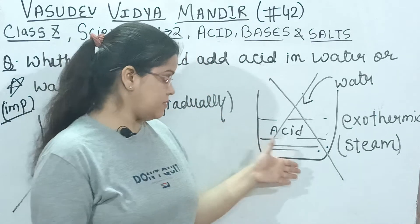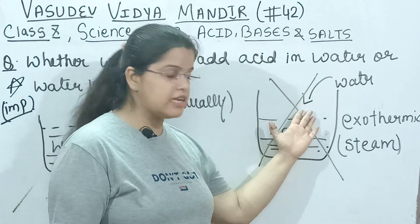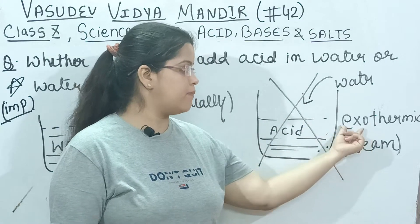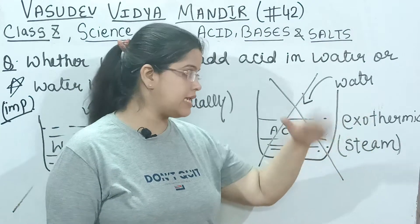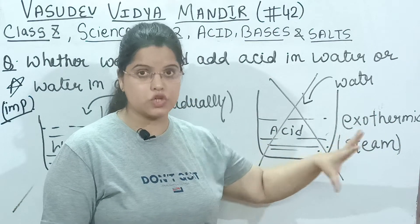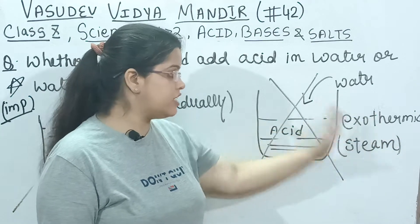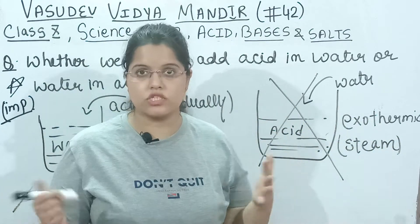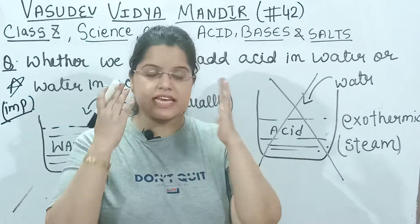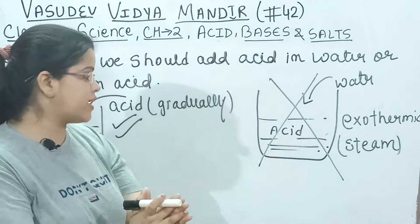So if you have acid in a beaker and you start adding water, it can be very exothermic. Exothermic means 'ex' — ex means out — and 'thermal' is related to heat. So a lot of heat will be generated, the water will become steam, and your hands and skin can be damaged.